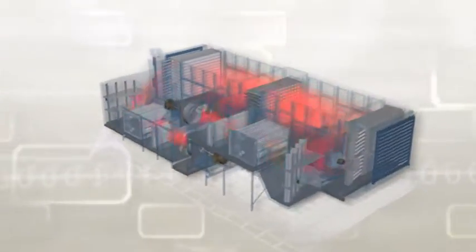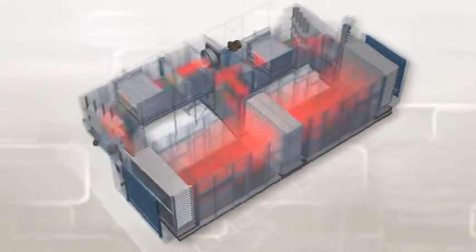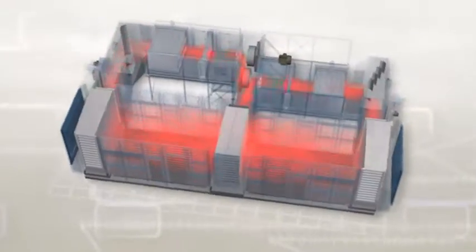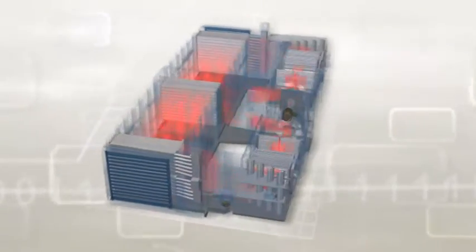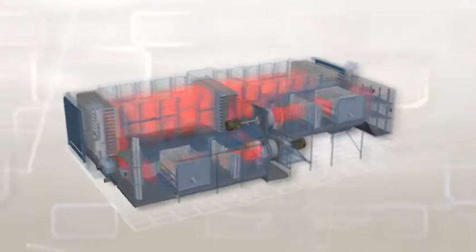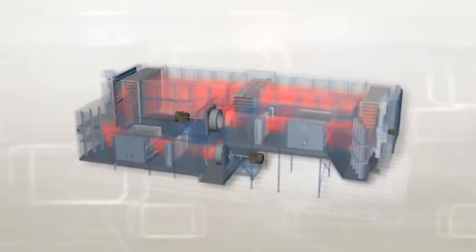Oxidation is the most critical process step in the production of carbon fiber. It consumes the most energy, has the largest factory footprint, and is the largest capital investment in a carbon fiber line. Any improvement to this step will have a huge impact on the cost and quality of carbon fiber.